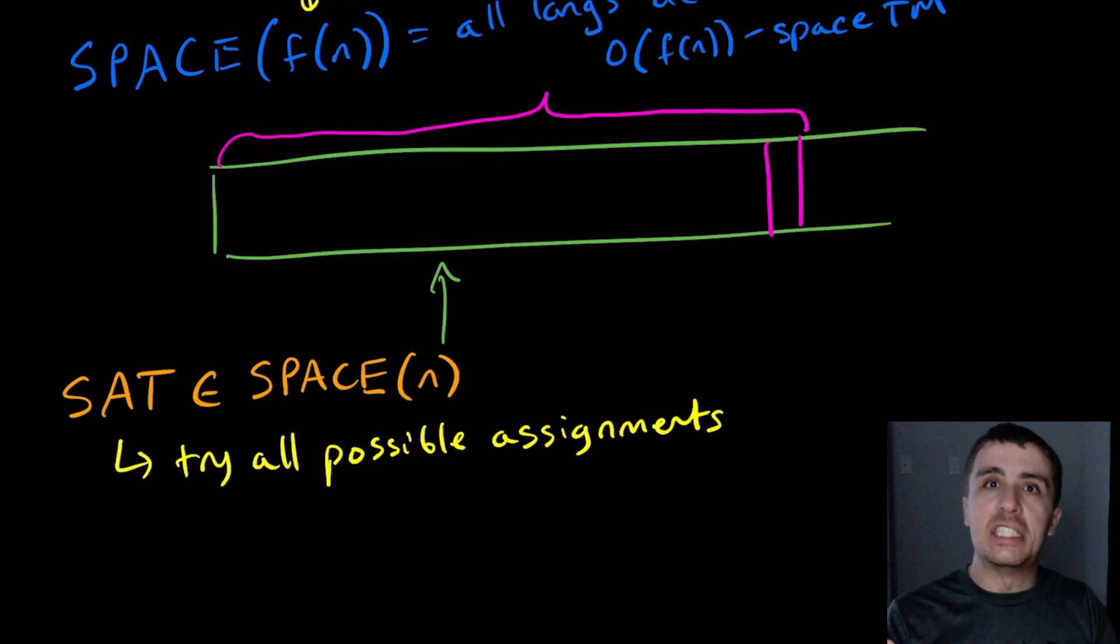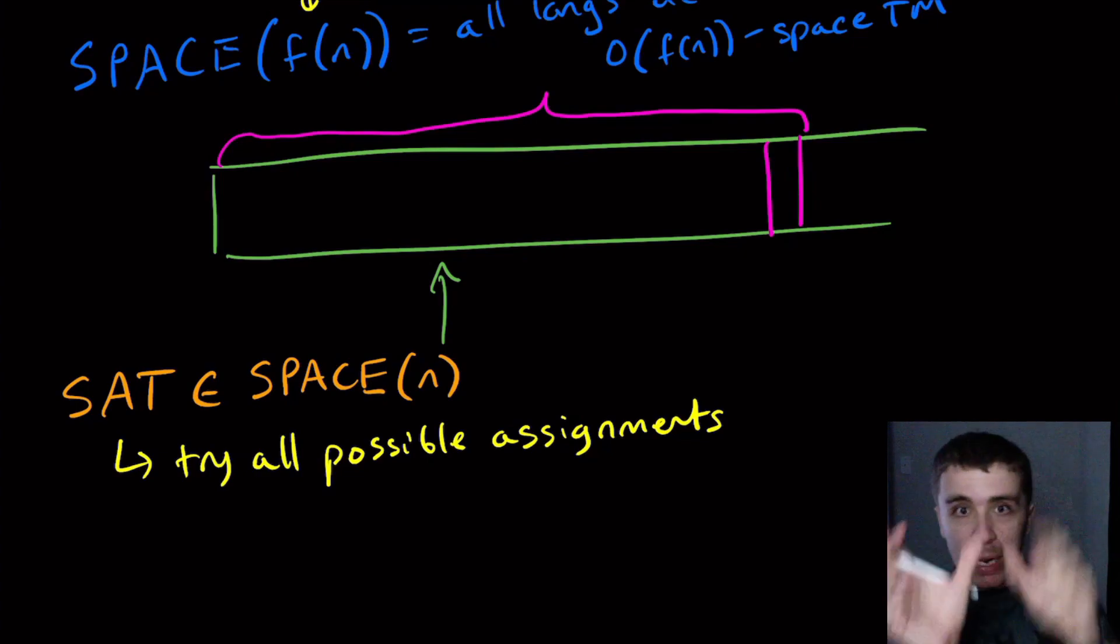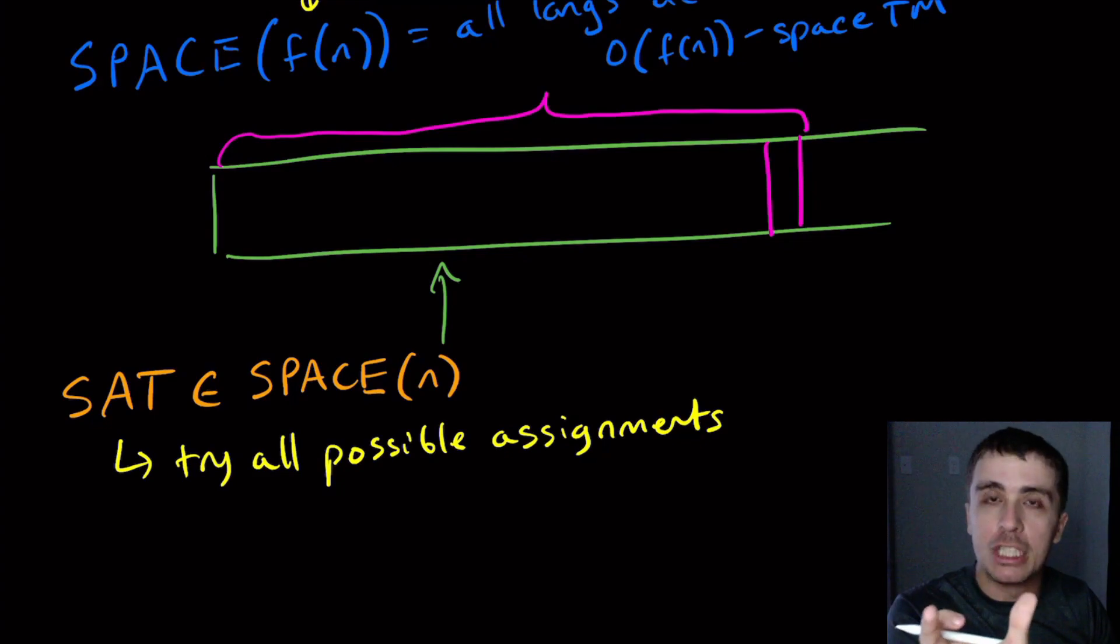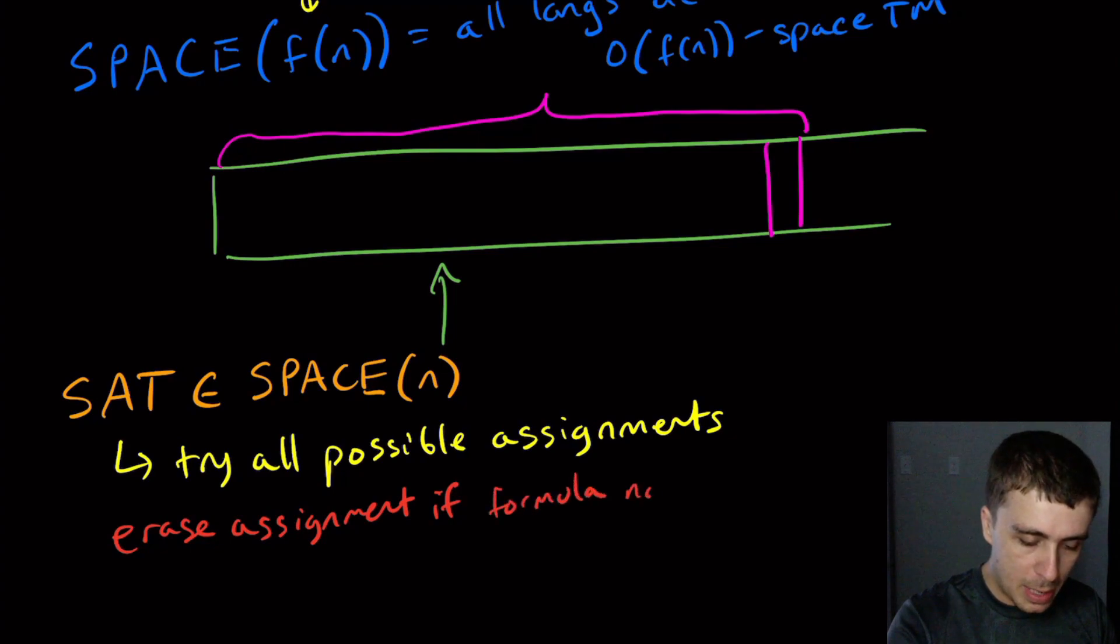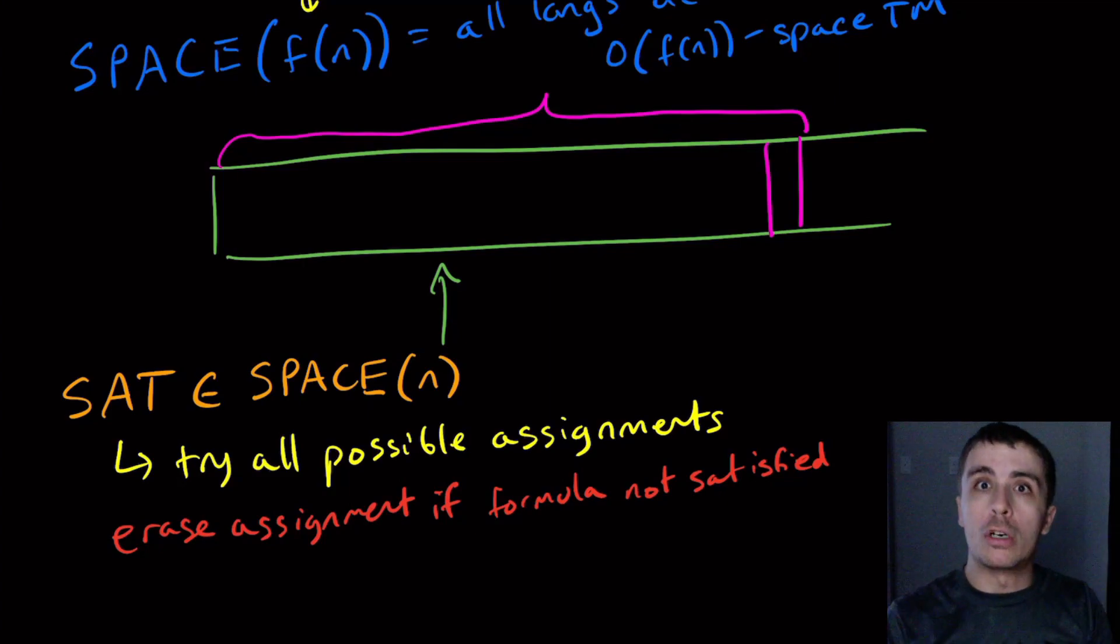So all possible assignments takes 2 to the n time but of course we don't care about the time. Here's the key point: we can reuse space but we can't reuse time. So if I try a candidate assignment and it doesn't satisfy the formula, then wipe the tape clean or the space that I had for the assignment clean and then write down the next assignment. So then what you do is you're reusing the space over and over and over instead of having to write down every assignment one after the other, which would be a dumb idea because I'm not reusing the space. Just erase the tape and then put the next assignment down and then just keep trying. So then the key here for this problem is to erase the assignment if formula is not satisfied.